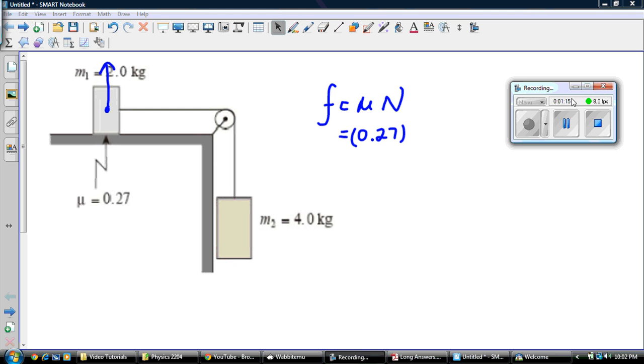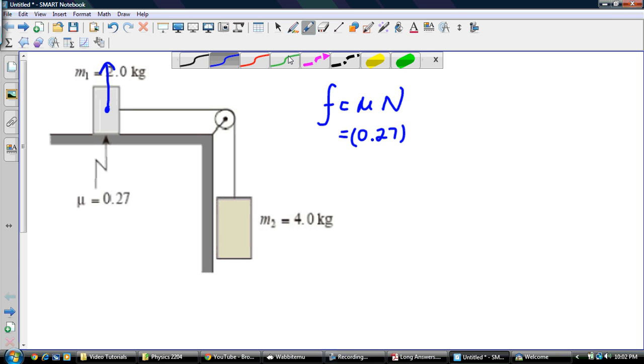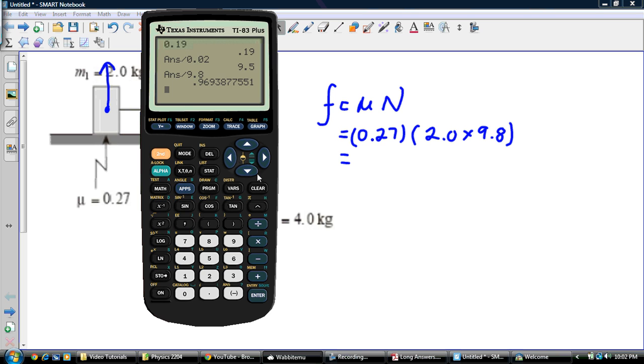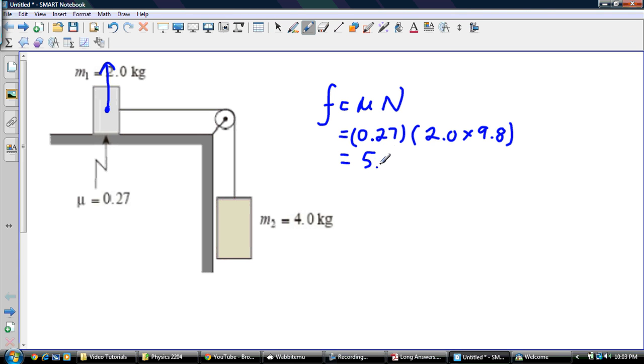So my frictional force is going to be 0.27 times the normal force. 0.27 is my coefficient of friction, and normal force is equal to mass times gravity, so 2.0 times gravity of 9.8. So we got 0.27 times 2 times 9.8, so we have a frictional force of 5.29 newtons.